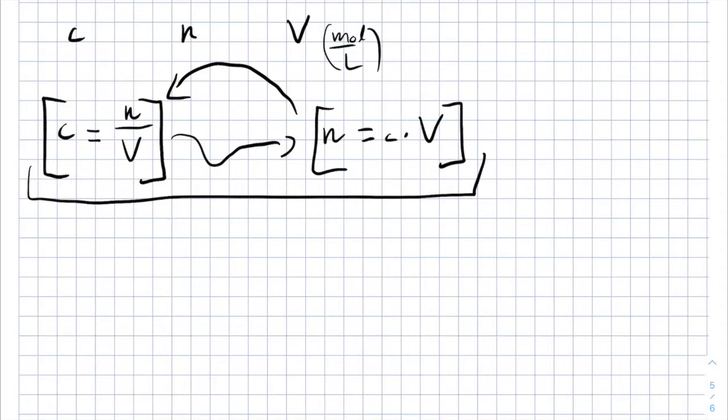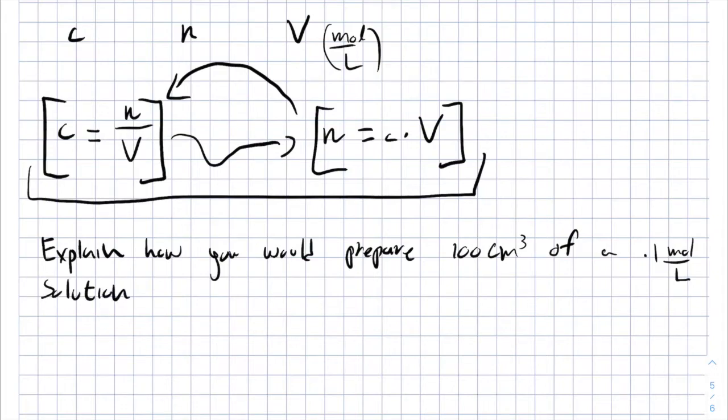Let's take an example from the Pearson chemistry book. Explain how you would prepare 100 cubic centimeters concentration of a 0.1 mole per liter solution of NaCl.